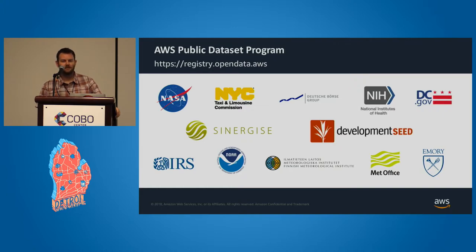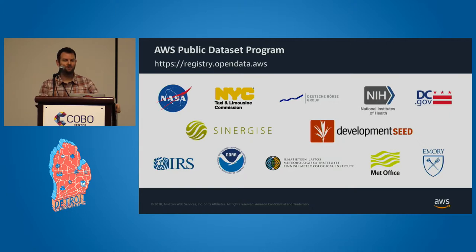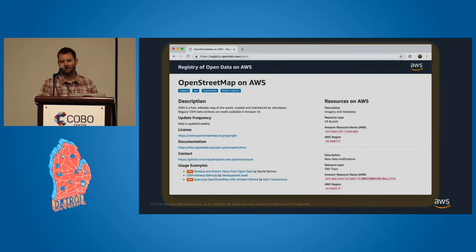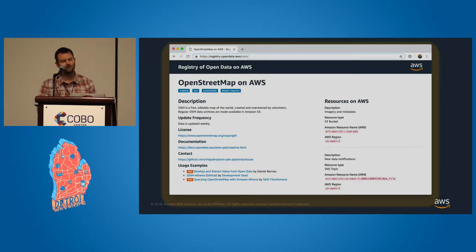We work with a lot of customers — this is a non-exhaustive list — to make different types of datasets available on AWS. The public datasets program as a whole is something like 15 to 16 petabytes of data. The datasets comprise all different types of data, from genomics data to data appropriate for machine learning to geospatial data, which is what I focus on, so there's a lot of satellite imagery. And more importantly for this conversation, OpenStreetMap is up there as a dataset as well. This is a view in our registry of open data on AWS.